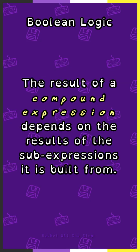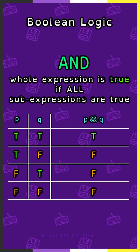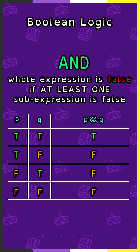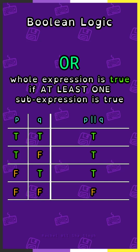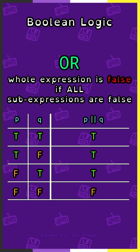The result of a compound expression depends on the results of the sub-expressions it is built from. For AND, the whole expression is true if all sub-expressions are true, and false if at least one sub-expression is false. For the OR operator, the whole expression is true if at least one sub-expression is true, and false if all sub-expressions are false.